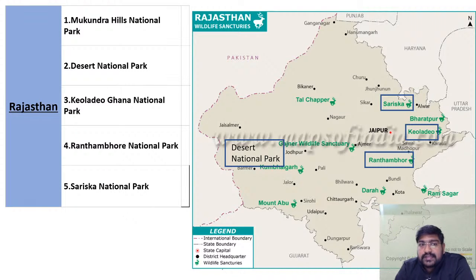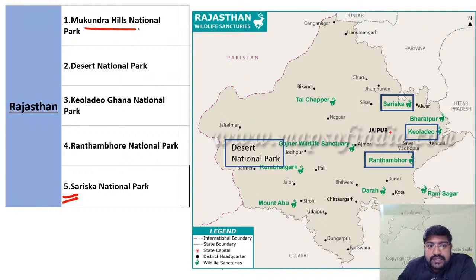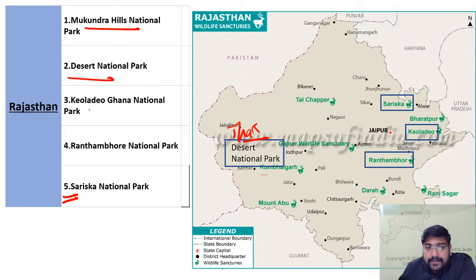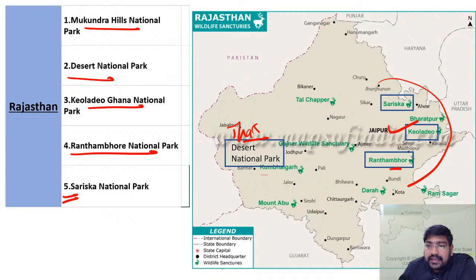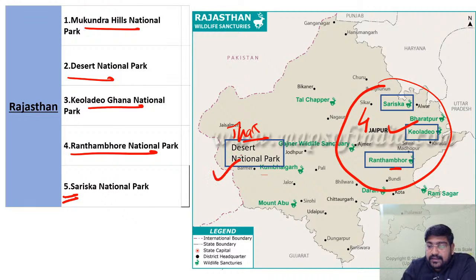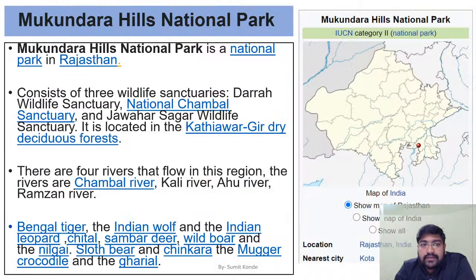Today we are going to start with Rajasthan. In Rajasthan, there are total five national parks: first is Mukundra Hills National Park, second is Desert National Park near the Thar desert, third is Keoladeo Ghana National Park, fourth is Ranthambore National Park. Most national parks are toward the east of Rajasthan, while Desert National Park is toward the west.